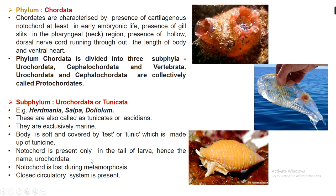As the organism undergoes metamorphosis — a process of development and changes in the body during part of its life stage — the notochord is lost. The notochord is present in the tail of the larva and is lost as the organism grows and develops. The circulatory system in Urochordata is a closed circulatory system.